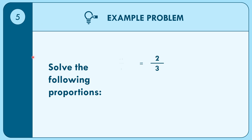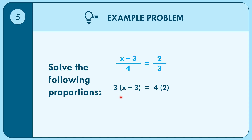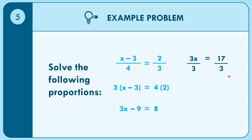Example 5: (X minus 3) over 4 equals 2 over 3. Using the cross product property: 3 times (X minus 3) equals 4 times 2. Using the distributive property: 3X minus 9 equals 8. Moving negative 9 to the right side gives 3X equals 8 plus 9, so 3X equals 17. Dividing both sides by 3, X equals 17 over 3.